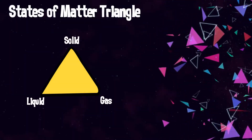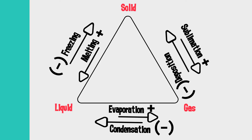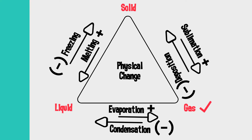If you take a look at this triangle you will see the different states, and you will see that matter can move from a liquid to a solid, solid to a gas, or go the other way around. This movement is a physical change, not a chemical change, and you also notice a plus or minus sign, which indicates if heat is added or if heat is taken away.